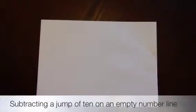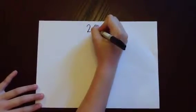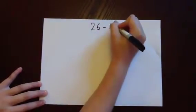Subtracting a jump of 10 and units on an empty number line. First write the sum clearly. 26, take away 13.